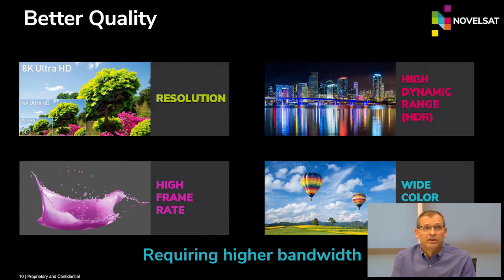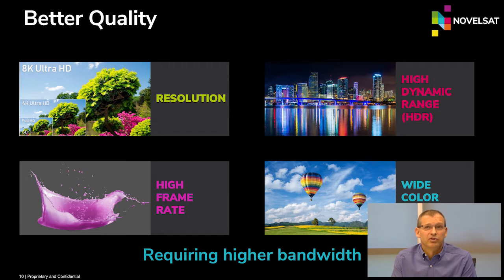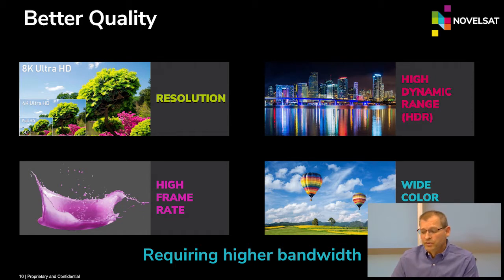Content is improving in multiple dimensions. Resolution is shifting from SD to HD to Ultra High Definition — from 4K to 8K. We see improvements in HDR, moving to better high dynamic range, a shift toward high frame rates giving better experience, and more wide color gamut for better color depth and more vivid images. All of this requires higher bandwidth — the better the picture, the more megabits needed.